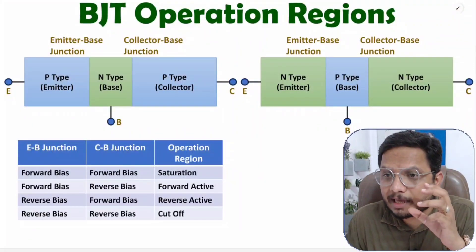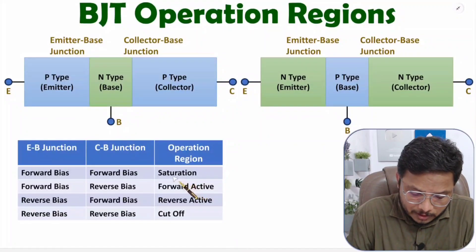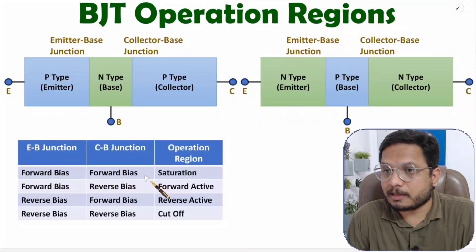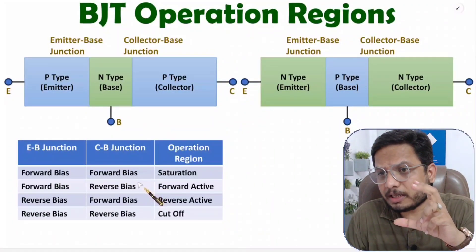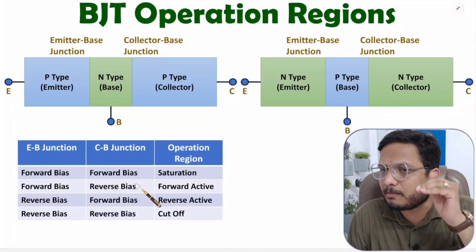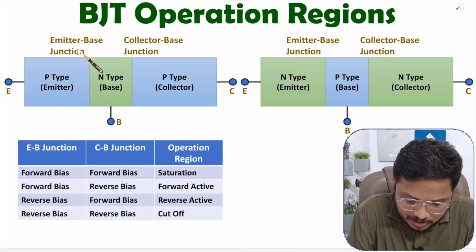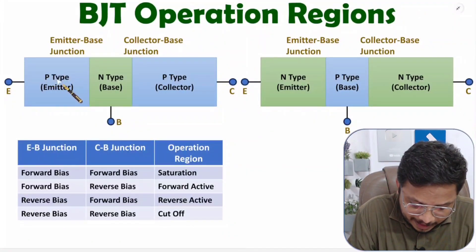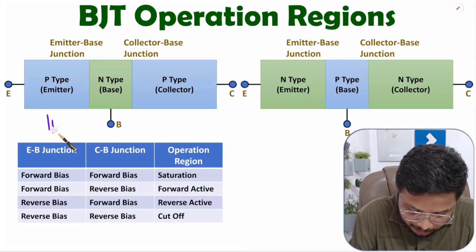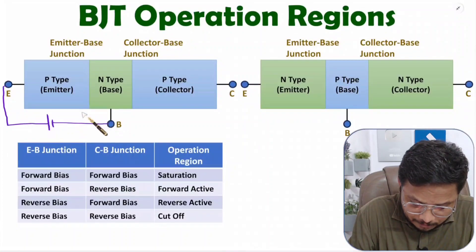Let us discuss first how we can keep BJT in saturation region. In saturation region, the emitter-base junction and the collector-base junction should both be in forward bias. I'll be considering common base configuration, where base is common. To keep the emitter-base junction in forward bias, the P-type should be connected with the positive terminal of the battery and the N-type with the negative terminal.